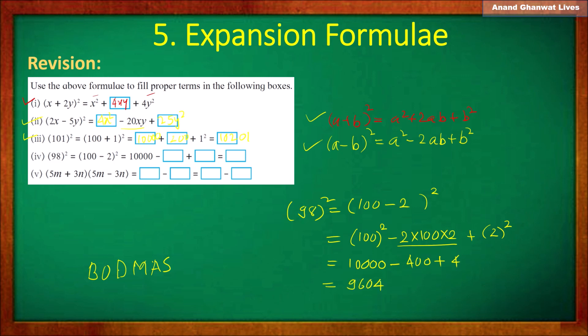So the square of 98 is 9,604. Put that answer in the activity sheet: 10,000 minus 400 plus 4 equals 9,604.